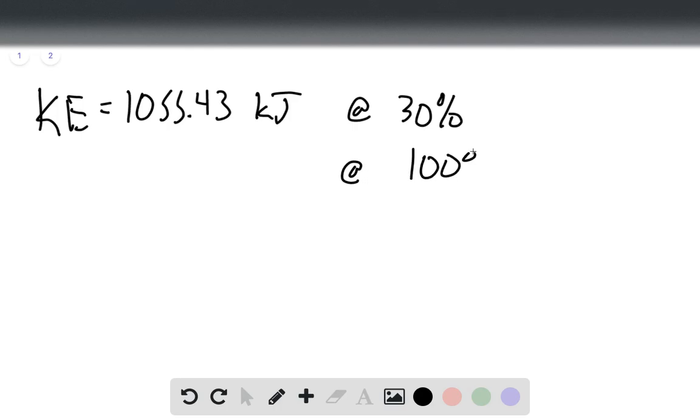And so to do that we'll take our kinetic energy and divide it by 0.3, that thirty percent, and that gives us the value at a hundred percent which is 3,518.1 kilojoules.